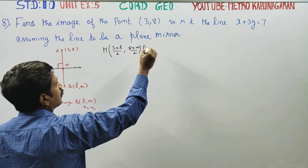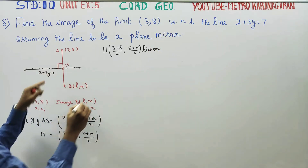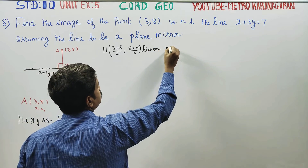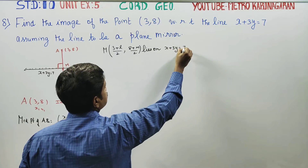The midpoint M of A(3,8) and B(L, M) lies on the line x plus 3y is equal to 7.